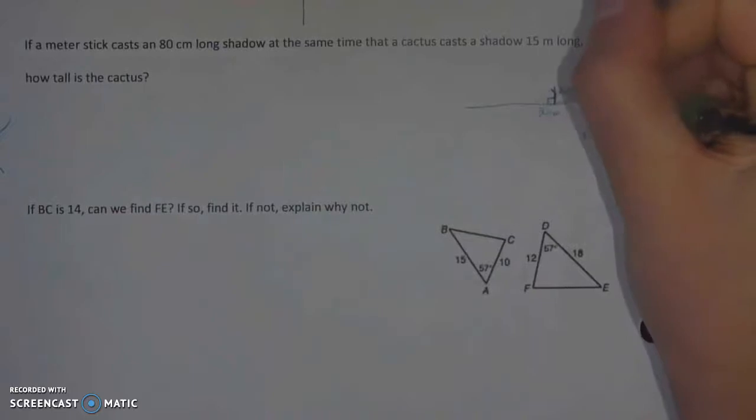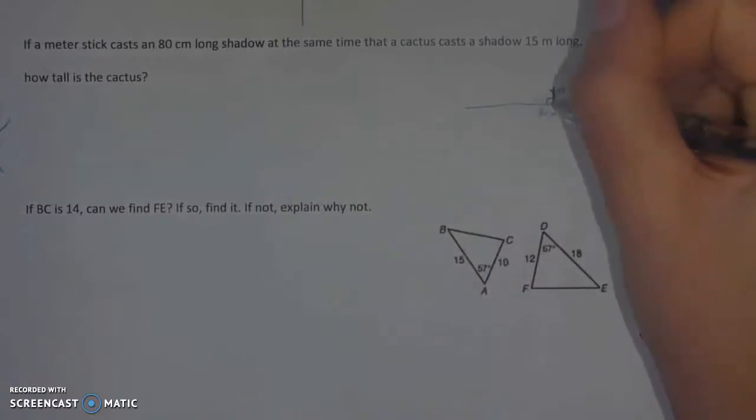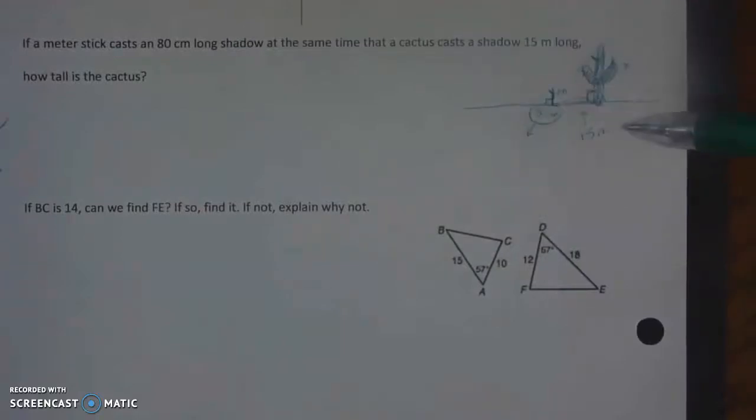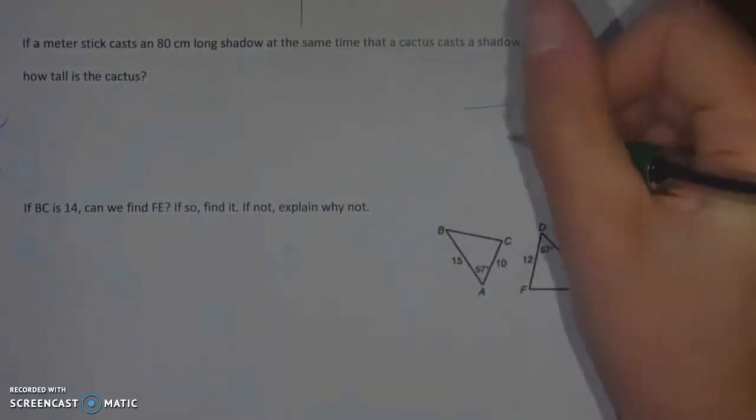So if I know that this is one meter and I'm trying to find this, I can find this using a proportion. There is one thing that you have to watch out for, and that is that everything is in the same unit. So I'm going to turn 80 centimeters into meters by just dividing by 100, which gives me 0.8 meters.